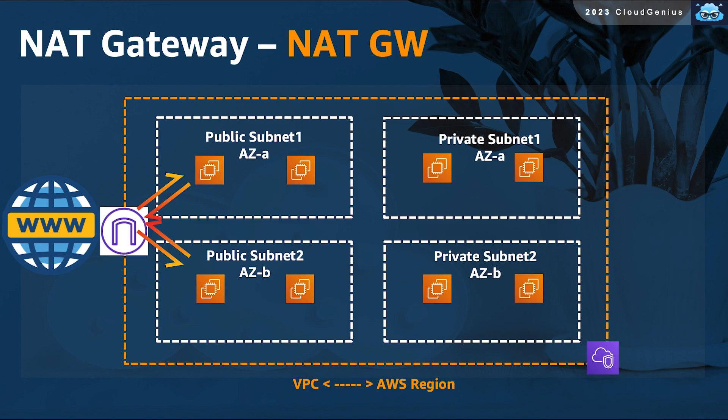What I meant was, there are some scenarios where your private resources might need to initiate a connection to the internet — maybe to download an update or a security patch. How can we let that happen? Well, you need another gateway of another type. You need a NAT gateway.